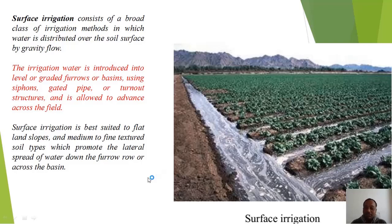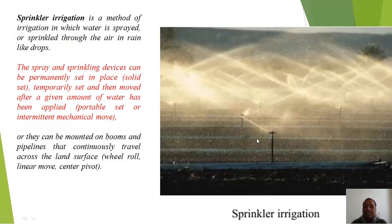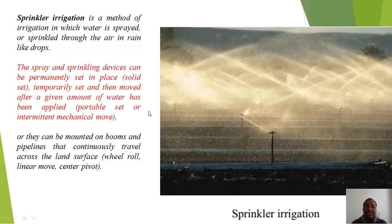To avoid water wastage, another method is sprinkler irrigation. Sprinklers are fitted in the land where irrigation is required. Sprinkler irrigation is a method in which water is spread or sprinkled through the air in rain-like drops. The spray and sprinkling devices can be permanently set, solid set, temporarily set and then moved, portable set, or intermittent mechanical move, or mounted on booms and pipelines that continuously travel across the land.